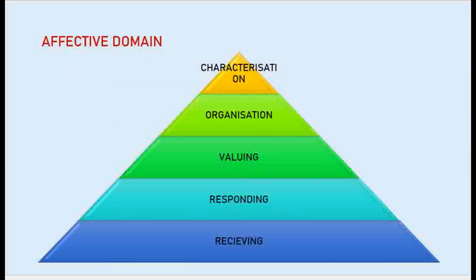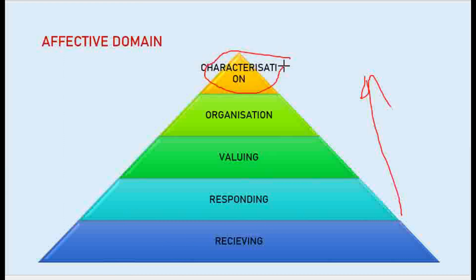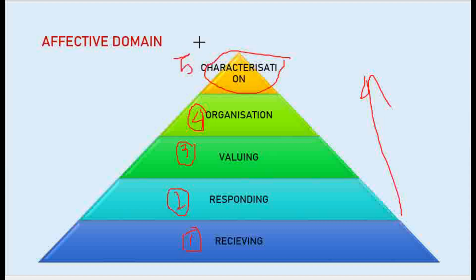Just like the cognitive domain, the affective domain also has objectives arranged in a pyramid shape. From the bottom, we can reach the top level — it is like an uphill movement. The levels are: receiving, responding, valuing, organization, and the last peak is characterization.